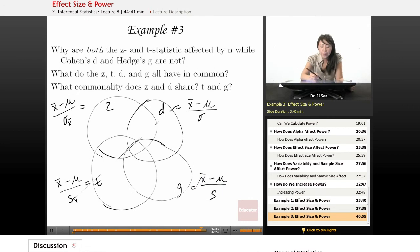So why are both the Z and T statistics affected by N, while Cohen's D and Hedges' G are not? Well, the thing that these two have in common is that these are about standard error, right? And standard error is either sigma divided by square root of N, or, or, I wish this was bigger, or S divided by square root of N, right? And it's this dividing by square root of N that makes these two so affected by N, right?